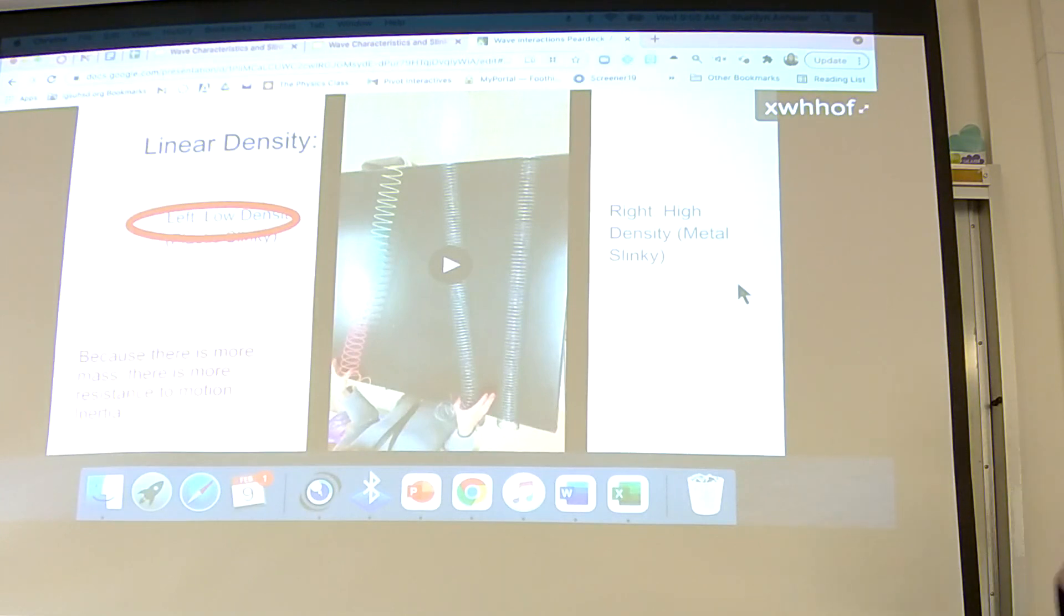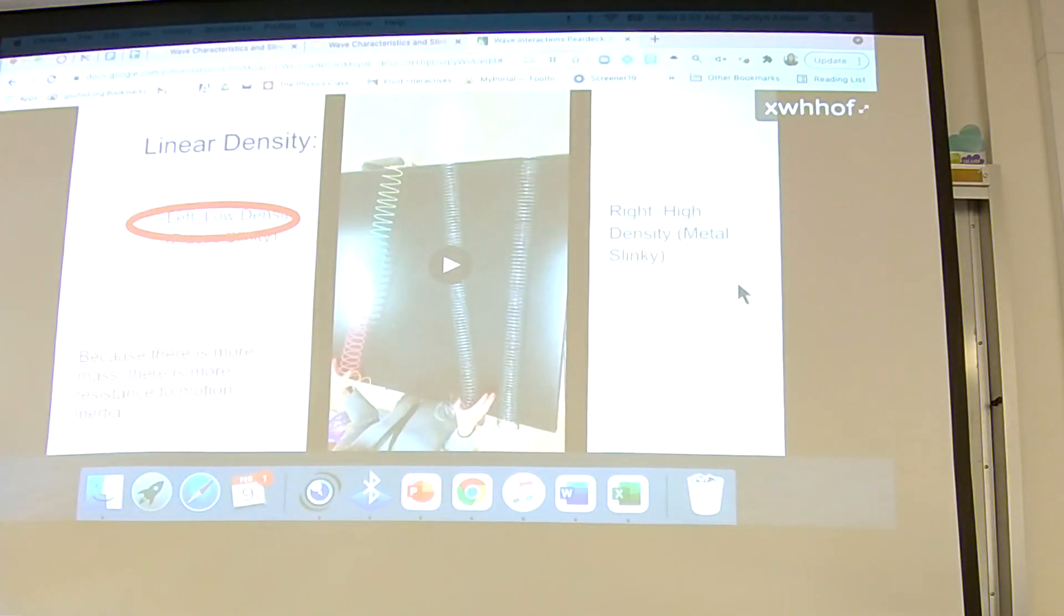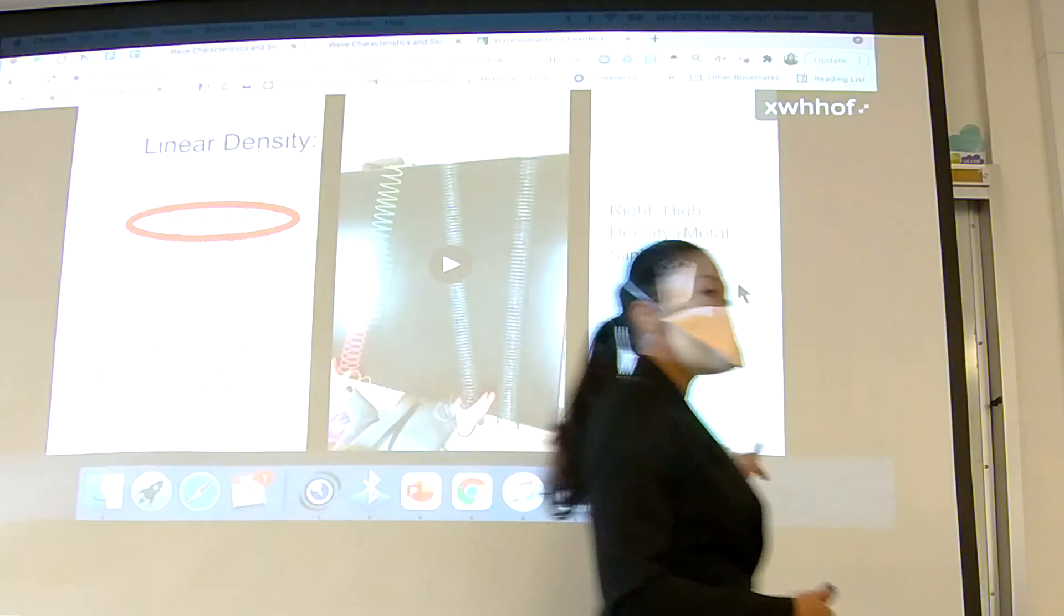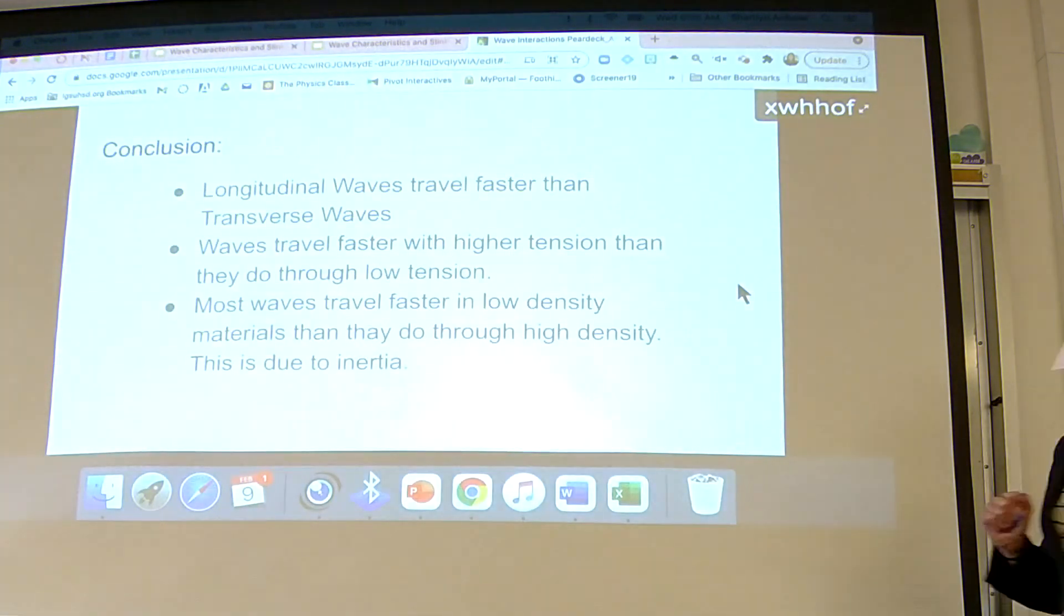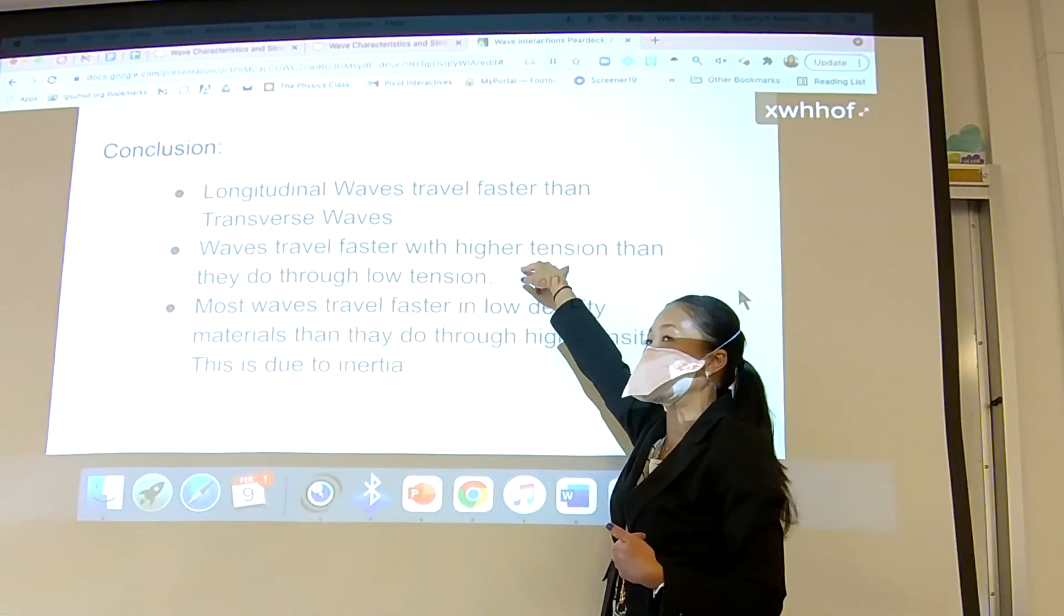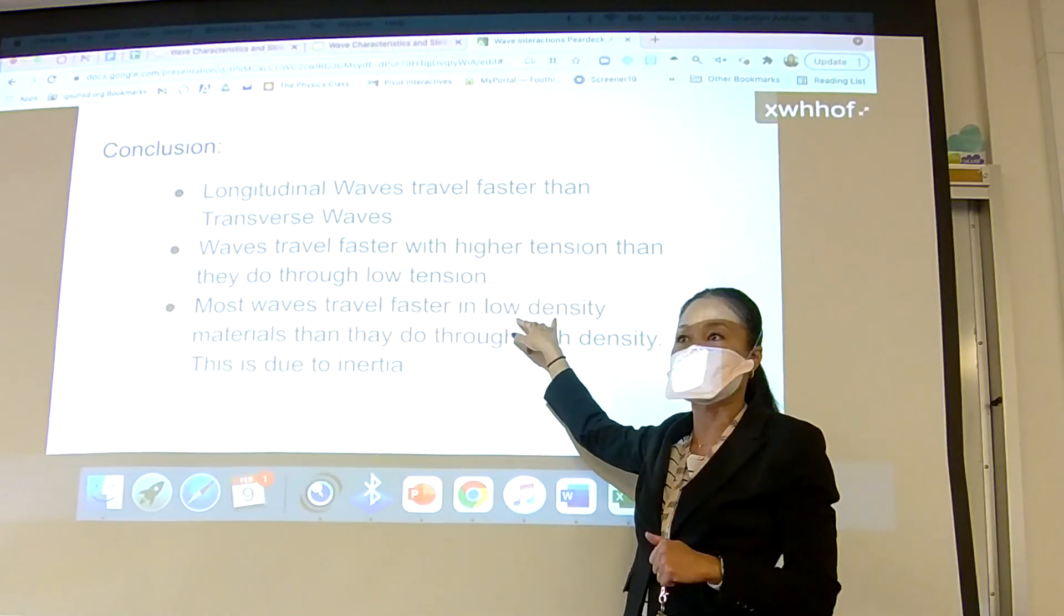The reasoning behind this is because of inertia. A lot of students answered that there's more mass to move, which means that it's going to have more resistance to motion and that by definition, by physics definition is inertia. The less mass you have to move, the faster it's going to go, the less resistance you're going to have. The more mass you have, like in the metal slinky, you're going to have more resistance. So it's going to move slower. So in conclusion, are there any questions on this?